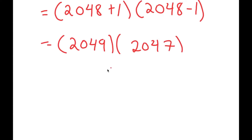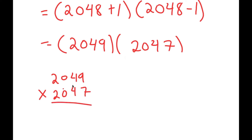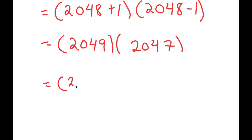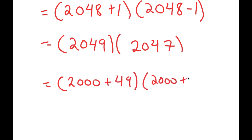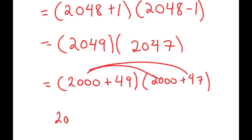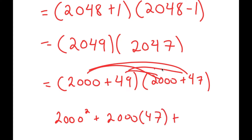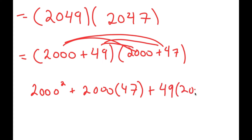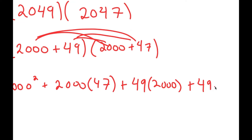A simpler way of multiplying this, rather than the usual method which takes too long, is to rewrite this as 2000 plus 49, times 2000 plus 47. From here I can simply distribute: 2000 times 2000, which is 2000 squared, plus 2000 times 47, plus 49 times 2000, plus 49 times 47.